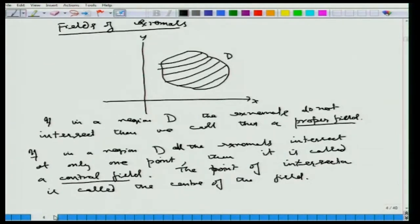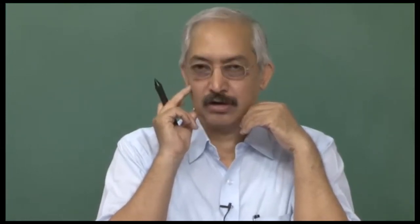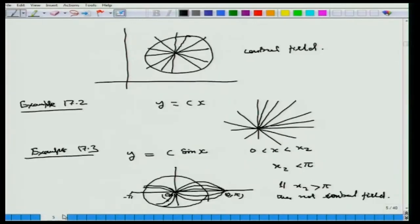We defined the concept of fields: if the extremals in region D do not intersect at all, such a field is called a proper field. If they intersect at one point and nowhere else, it is called a central field, and the point where all these extremals intersect is called the center of the field. For example, with y = C sin x, all the curves intersect at the origin, and next they intersect at (0, π) or (0, −π). So it forms a central field in a small neighborhood around the origin, provided π or −π are not in the domain.